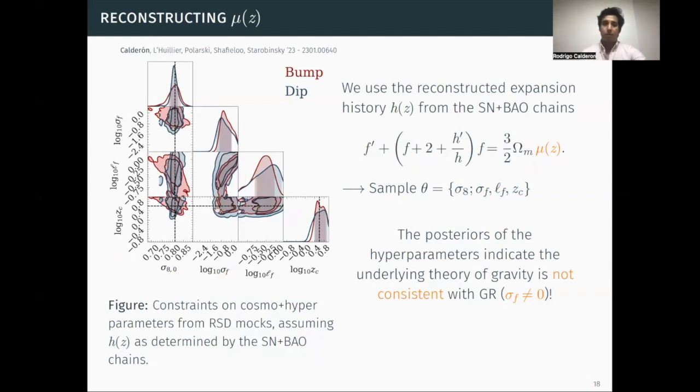What this means is that the data is requiring deviations from the mean function. If GR was a good description of the data, this posterior distribution should be consistent with vanishing values of sigma f. But because it's peaking at non-vanishing values, this means that the underlying theory of gravity or the mean function is not consistent with the data. Even more interesting is the fact that because Zc is a free parameter, I can essentially constrain when this deviation happens. You see that both posterior distributions peak at the correct redshift when these fiducial models deviate from GR.